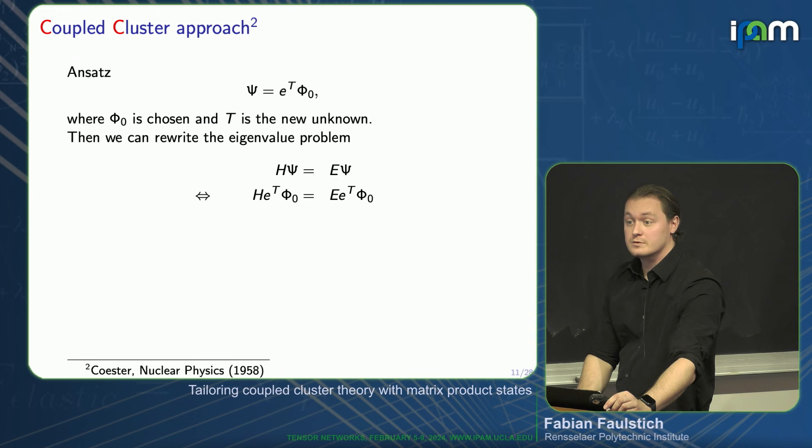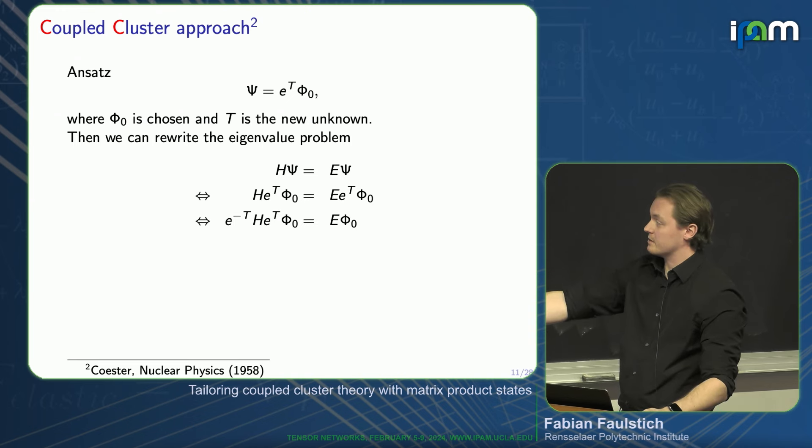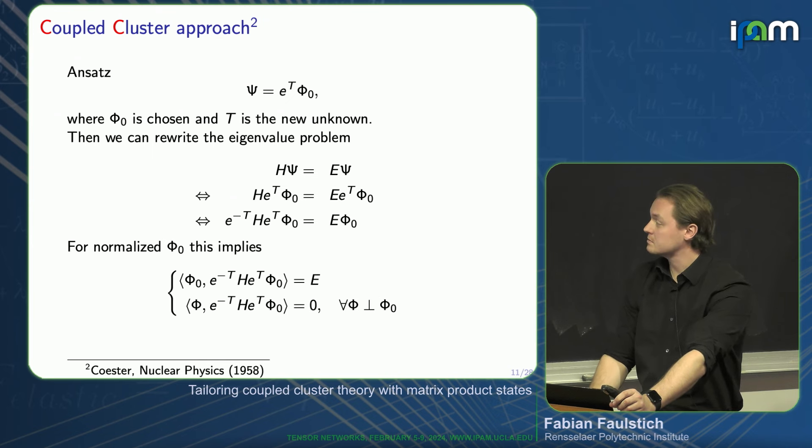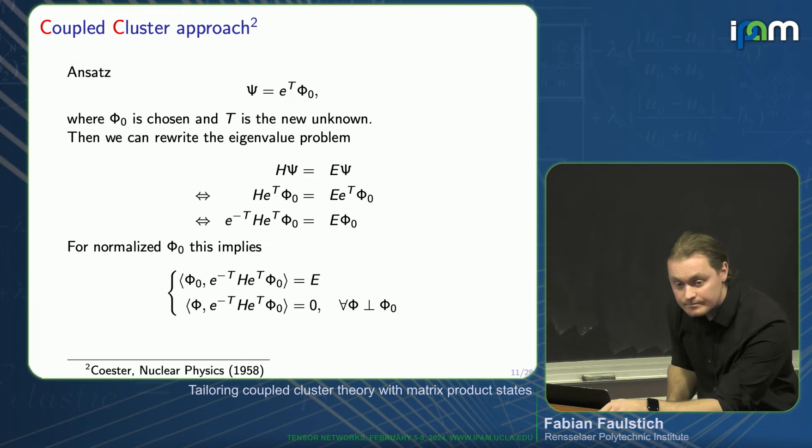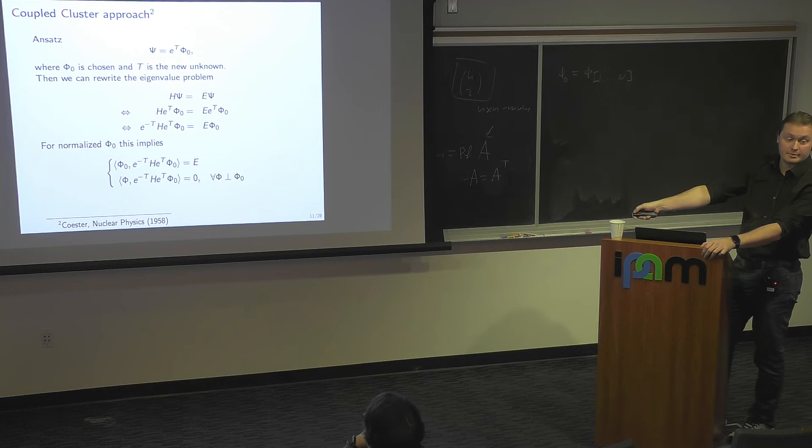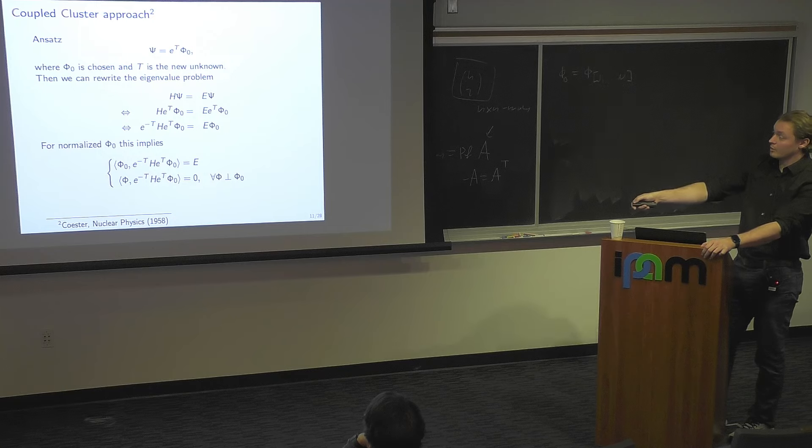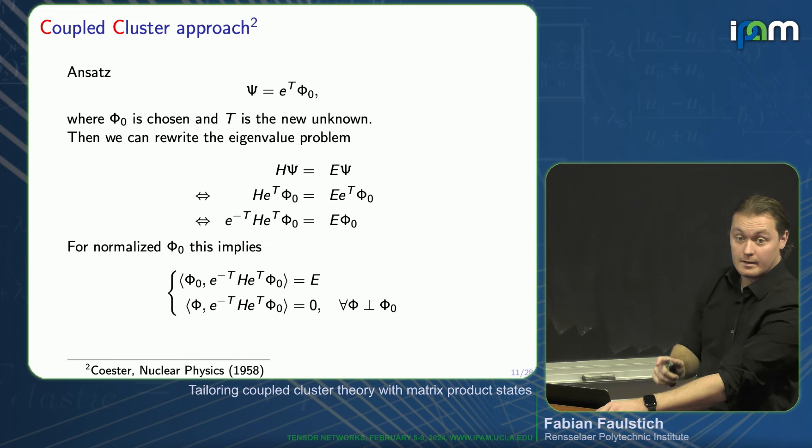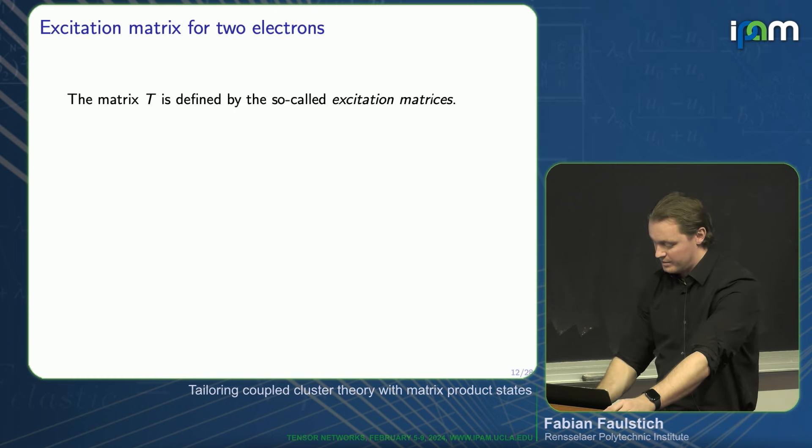So this is phi zero, and T is a matrix. I will tell you what T is in just a second, but for now, let's accept there exists such a matrix such that I can express the state of this form. Let's see what happens to our eigenvalue problem if we substitute this ansatz. Exponential T is invertible, so we can move it over to the other side, and we obtain this similarity transformed Hamiltonian applied to our basis vector phi zero equals the energy phi zero. Now, what we can do is we can form projective equations. We can project onto phi zero. So you're pretending phi zero is the ground state, basically, assuming that T gives you precisely the ground state.